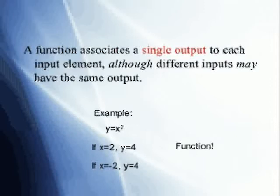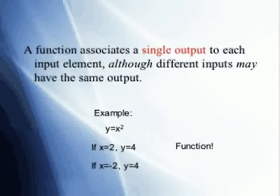Take y equals x squared, for example. If I put an input value of 2 into the equation, I will get out 4. However, if I put in negative 2 and square that number, I will also get 4. Each input value has a single output value. In other words, if I put 2 into the equation, I cannot get out any other number than 4, and if I put in negative 2, I cannot get out any other number than 4.